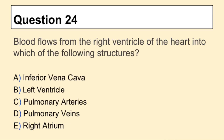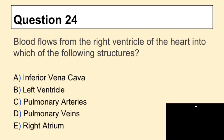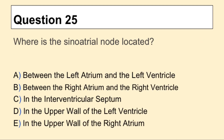Question 24: Blood flows from the right ventricle of the heart into which of the following structures? Question 25: Where is the sinoatrial node located?